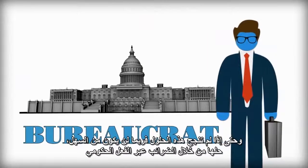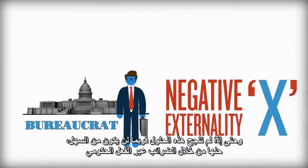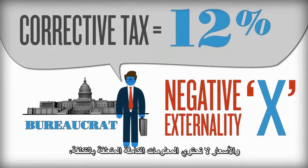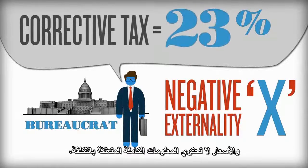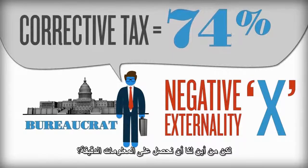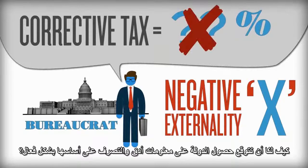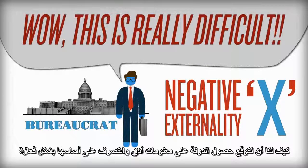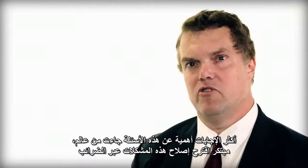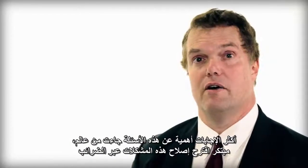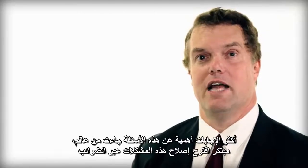Even if these solutions don't work, it may not be easy to fix it with taxes through state action. Remember, the problem is information — prices don't contain the full information about cost. But where can accurate information be obtained? How can the state be expected to acquire more accurate information and then act on it effectively?